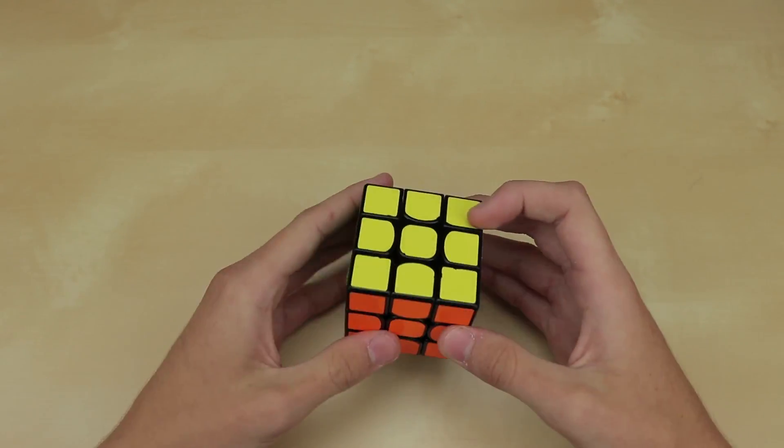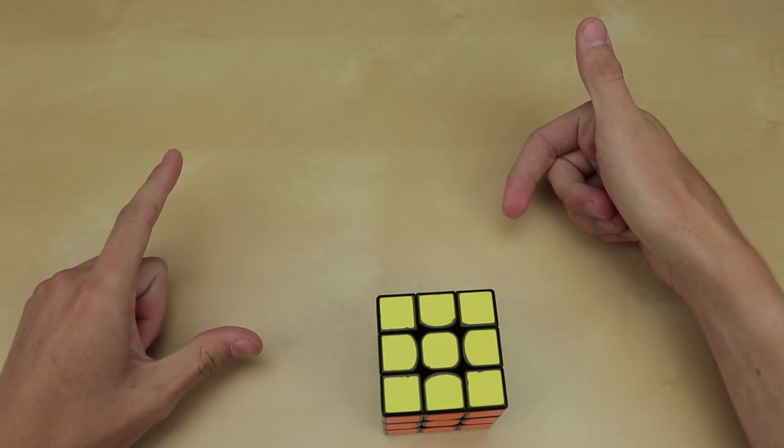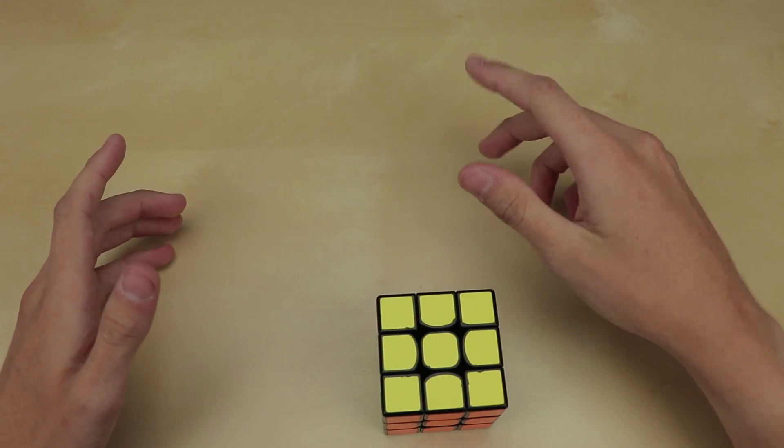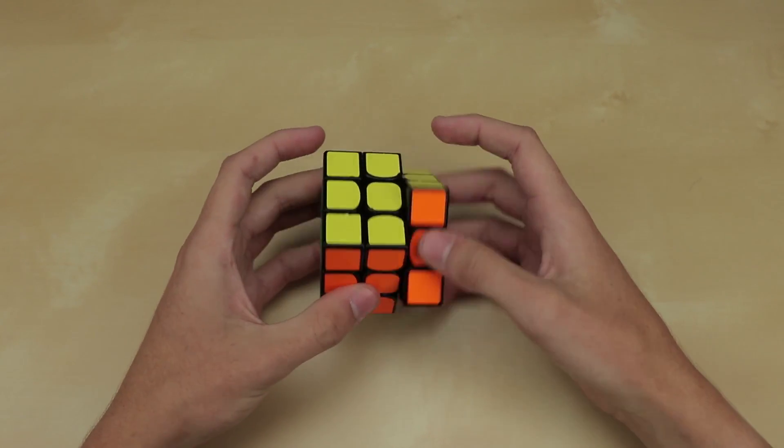But finally, how did I do it? It's actually pretty simple. Basically for those four days, I kept a little piece of paper in my pocket that had all the OLL cases and a couple possible algorithms for each one.